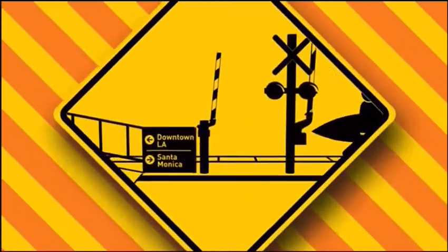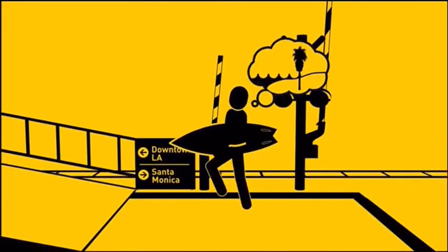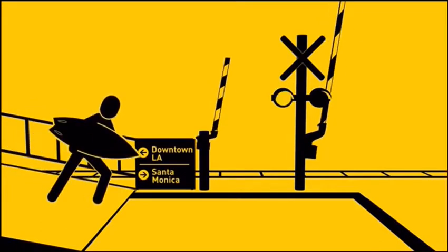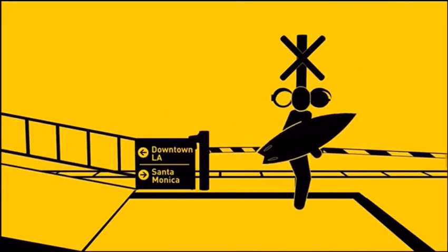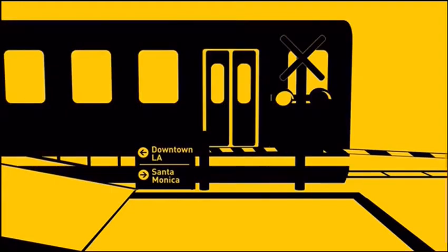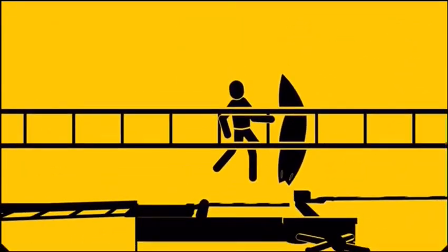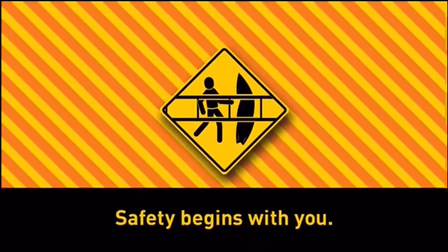It's a beautiful day in Safetyville and Martin is taking Metro to the beach. Martin, you're on the wrong platform. Huh? Uh-oh. It looks like Martin won't be catching that wave. Don't go around lowered safety arms. Safety begins with you.